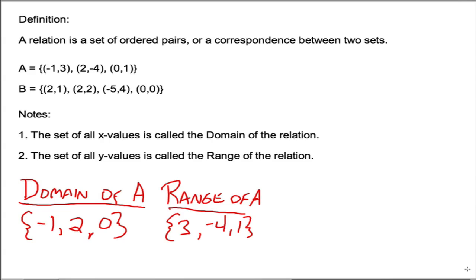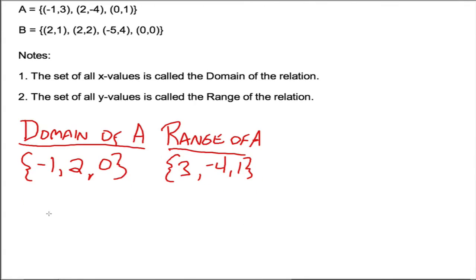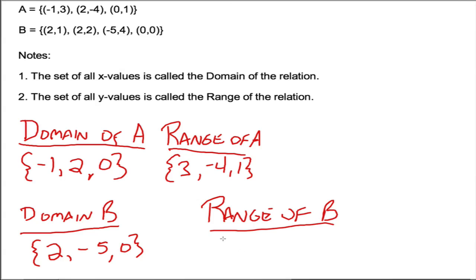The domain of B looks like what? Well, here we've got some that repeat. Two repeats twice—we only need to write it down once. It doesn't matter that it appeared twice. Then we've got negative five and zero. You could write these in order from smallest to largest if you wanted, but it doesn't really matter. And the range of B would be one, two, four, and zero.